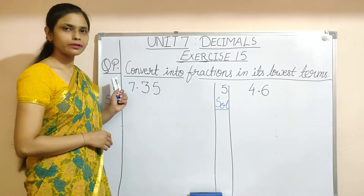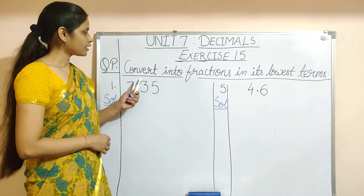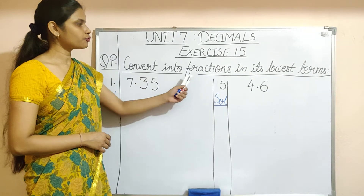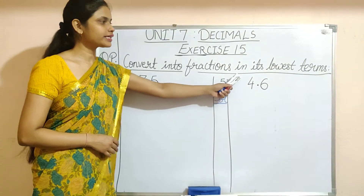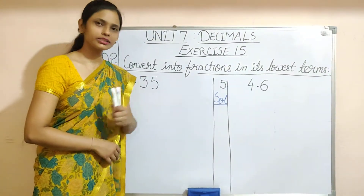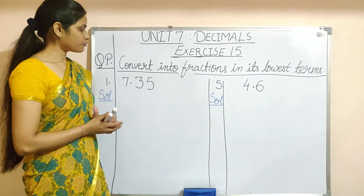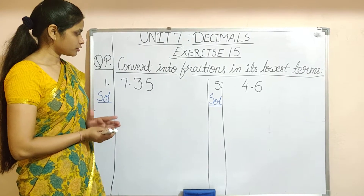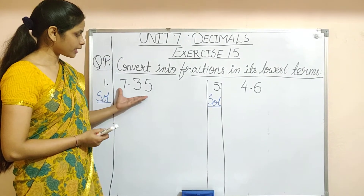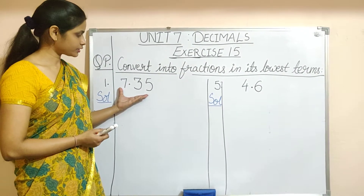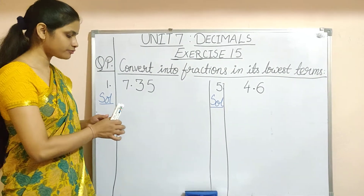Now let us do question number B in which we have to convert into fractions in its lowest term. First you will write the decimal number here. It is 7.35.